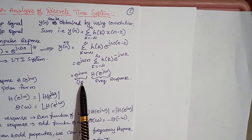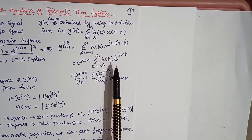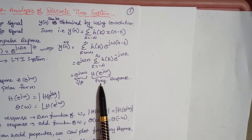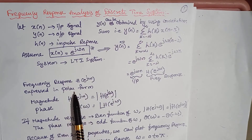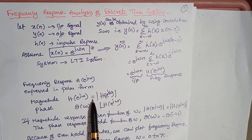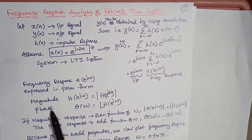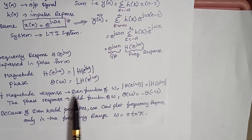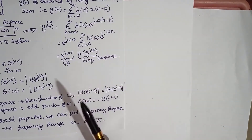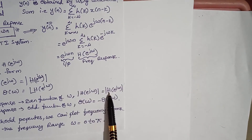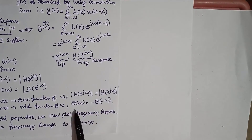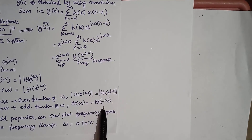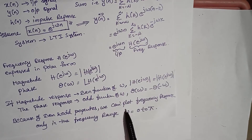Here e power j omega n is the input. If you take the Fourier transform of this signal, you will get H of e power j omega, which is known as the Frequency Response. This frequency response can be expressed in polar form: the magnitude is the modulus of H of e power j omega, and this is the phase. If the magnitude response is an even function of omega, then modulus of H of e power j omega equals modulus of H of e power j omega. If the phase response is an odd function of omega, then the phase can be expressed as theta of omega equal to minus theta of minus omega. Because of these even and odd properties, we can plot the frequency response only in the frequency range omega equal to 0 to pi.